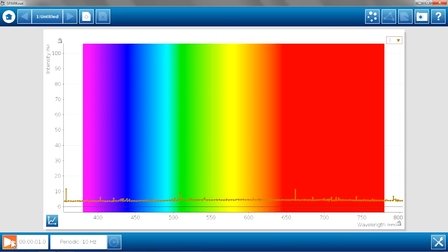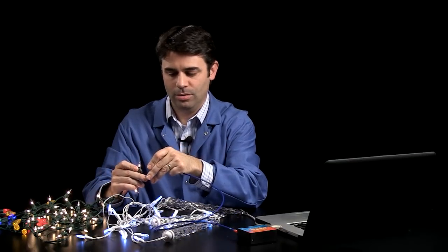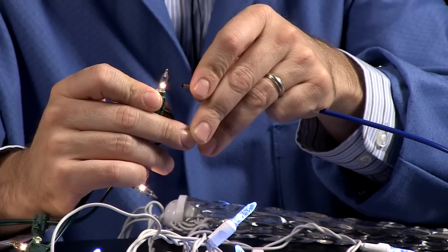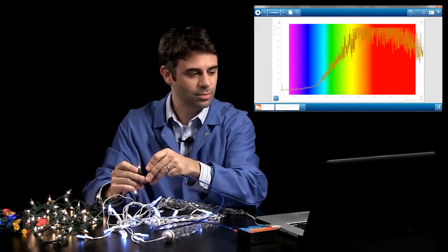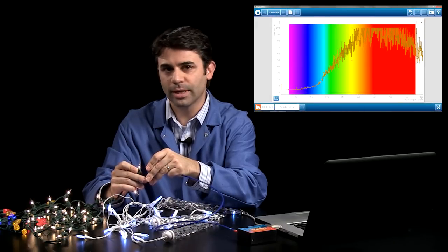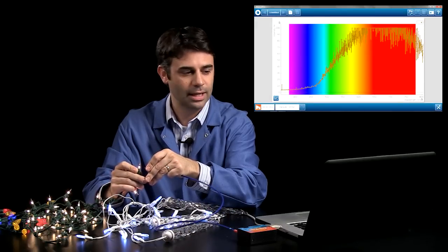We'll start our spectrometer. On the software, I'm running intensity versus wavelength. And we'll just take a look at this incandescent bulb. Notice it's a very broad spectrum going all the way from blue over to red and into infrared. And it's actually a very bright bulb.